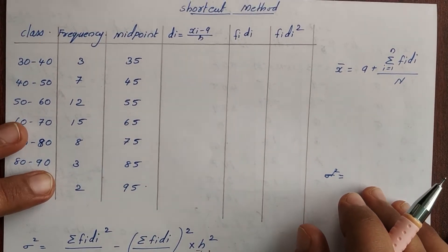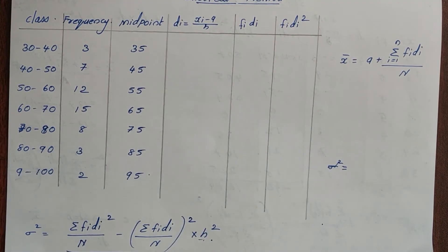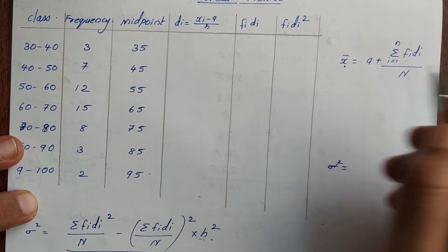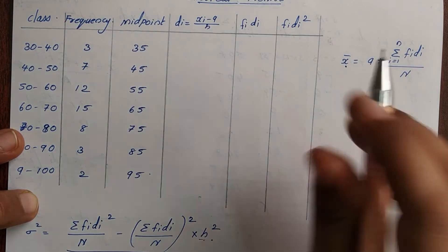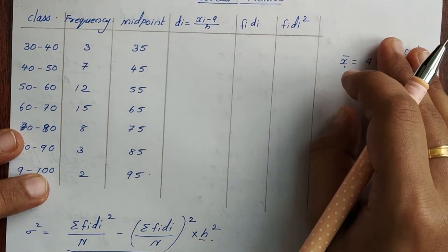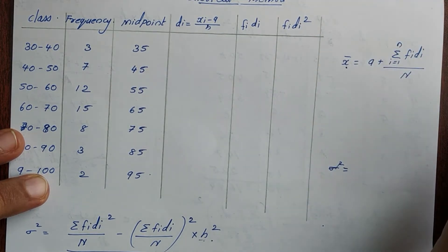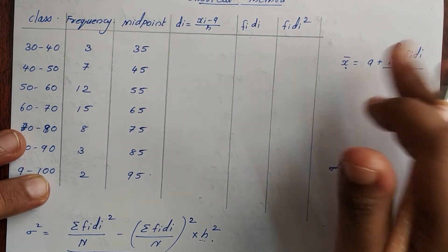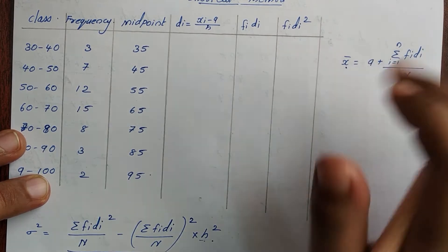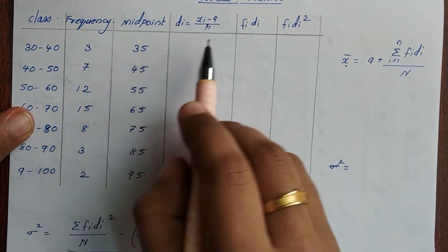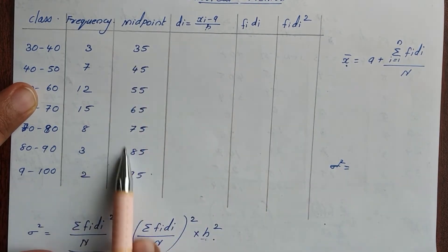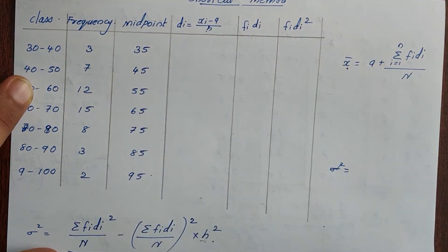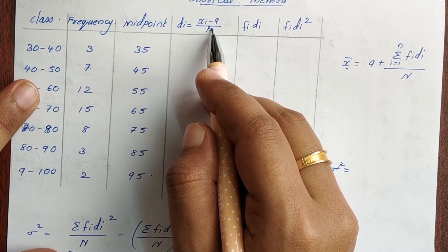Now the shortcut method leads us to the step deviation method. Here we find the midpoint, then define di equal to (xi minus A) divided by h, where A is the assumed mean and h is the class size.